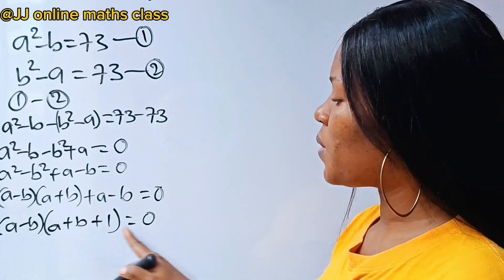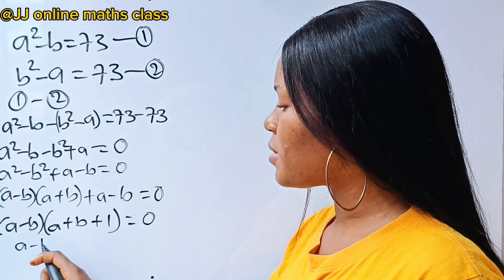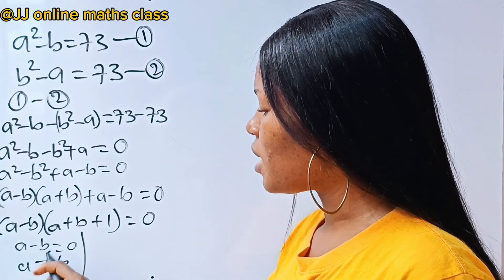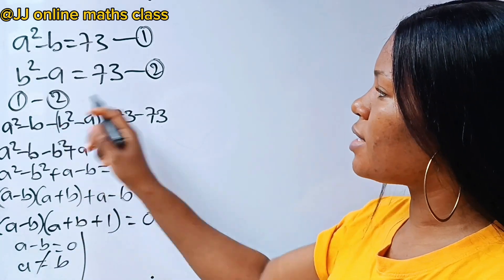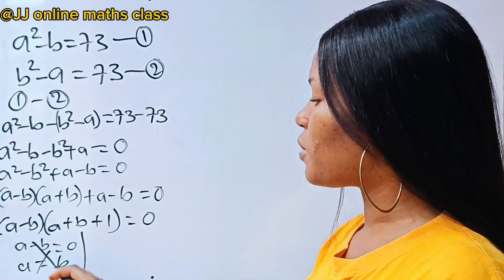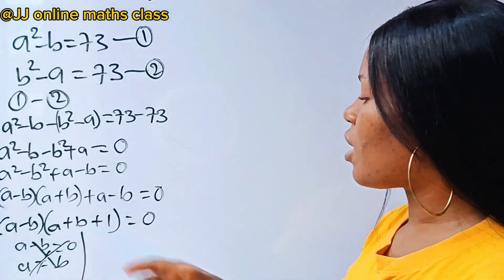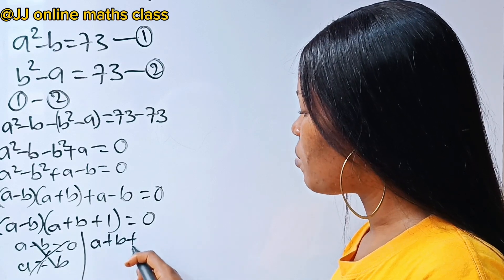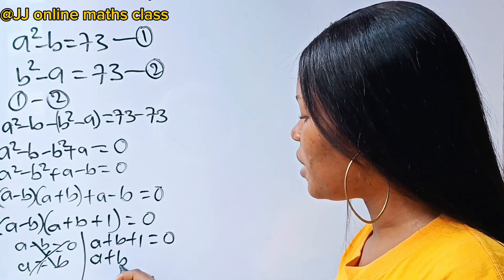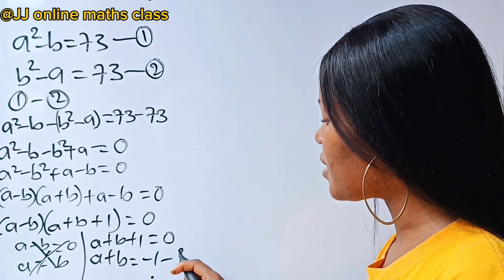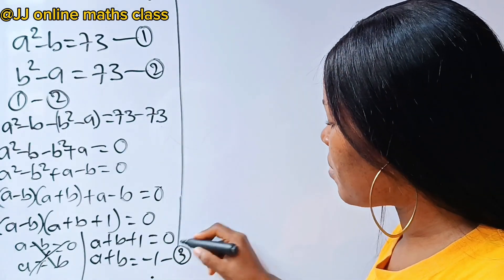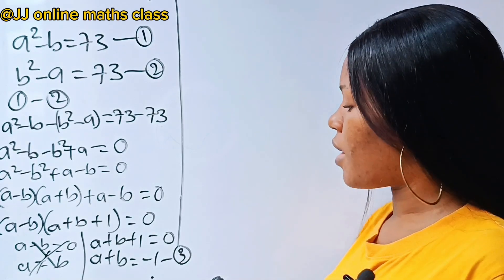That means a minus b equals 0, which gives a equals b. But we are told that a is not equal to b, so we discard that. The second factor gives a plus b plus 1 equals 0, meaning a plus b equals minus 1. Let's call this equation 3 — it's very important.